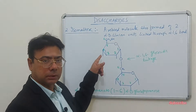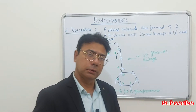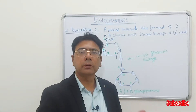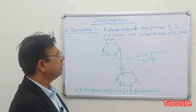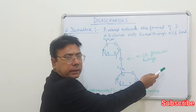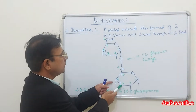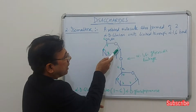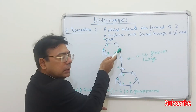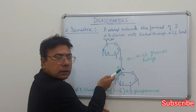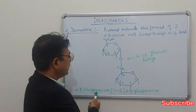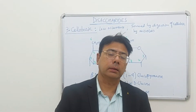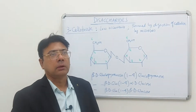A related disaccharide is isomaltose, which is also made up of two alpha-glucose units but has a different structure from maltose. Unlike maltose which has a 1,4 glycosidic linkage, isomaltose has an alpha 1,6 glycosidic linkage, in which carbon one of one glucose molecule is linked to carbon six of the other glucose molecule. It can be named alpha-D-glucopyranose 1→6 alpha-D-glucopyranose.